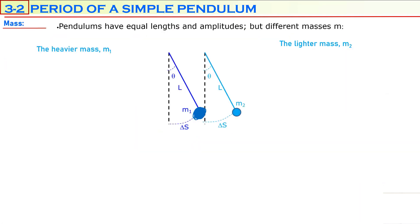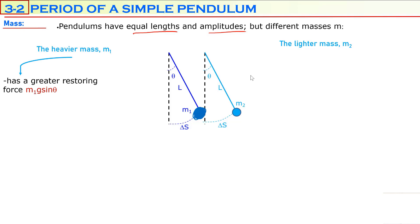One pendulum will have a heavier bob than the other. The first pendulum, M1, will have a heavier mass than the second pendulum, M2. All other quantities are the same: lengths, amplitudes, and free-fall accelerations are equal. The heavier mass will have a greater restoring force — M1g sine theta — while the lighter one has a smaller restoring force, M2g sine theta.